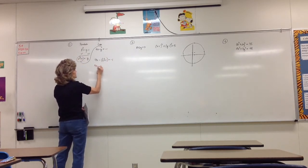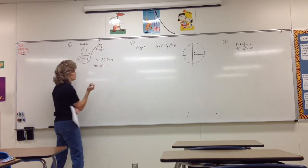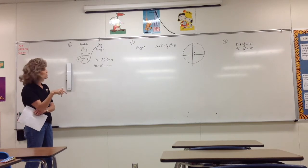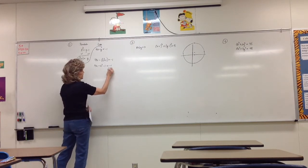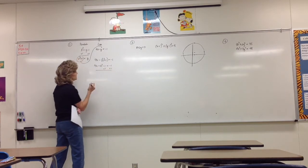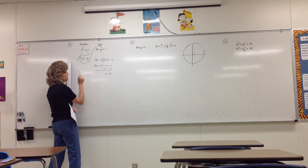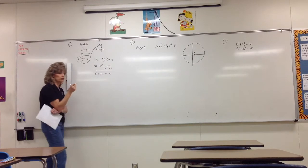Distribute the negative sign: 4x minus x squared minus one equals negative one. That's a quadratic equation. We want to put it in standard form and make it equal zero, so we add one to both sides. Now it equals zero, and in standard form we have negative x squared plus 4x equals zero.